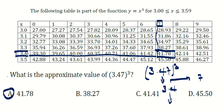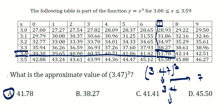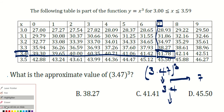The next question asks for the approximate value of the cube root of 34010. This is the reverse process. We need to get back and see the table. When you see the table, the numbers are not big — around 27, 29, 32 — with two digits before the decimal point and two digits after.